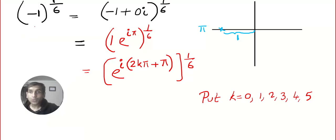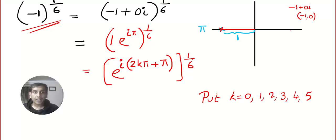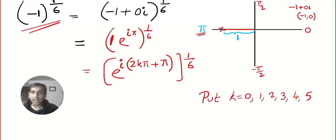For (−1)^(1/6): remember, −1 means −1 + 0i, which is the coordinate (−1, 0) on the negative x-axis. The modulus is 1 and the angle is π, so we write e^(iπ). Generalizing: e^(i(2kπ + π)), raised to the power 1/6. Plug in k = 0, 1, 2, 3, 4, 5 to get all six 6th roots.